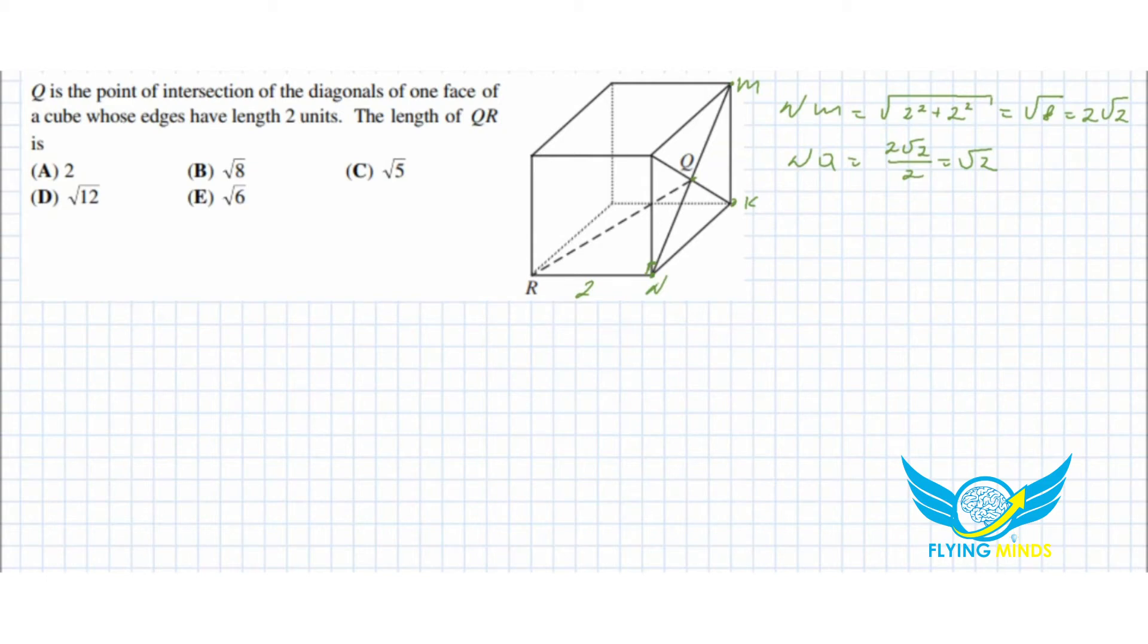Now, RQ. RQ equals to square root of square root of two squared plus four equals to square root of six. Here's our answer.